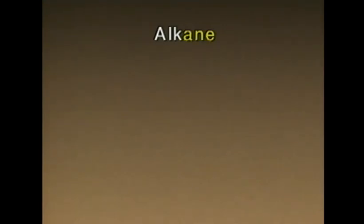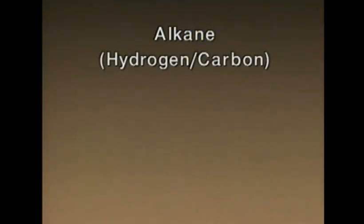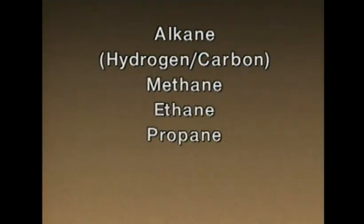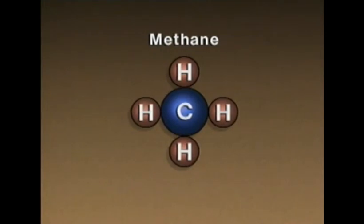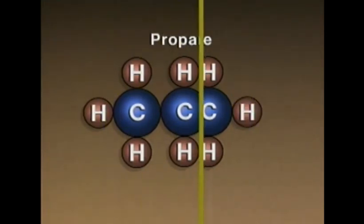For example, the letters '-ane' at the end of a chemical name indicate that the molecule is part of the alkane group of hydrocarbons. A hydrocarbon is a compound that contains only hydrogen and carbon. Three of the most common alkanes are methane, ethane, and propane. Within the alkane group, there is a connection between the first part of the name and the number of carbon atoms a molecule contains: methane has one carbon atom, ethane has two, and propane has three.